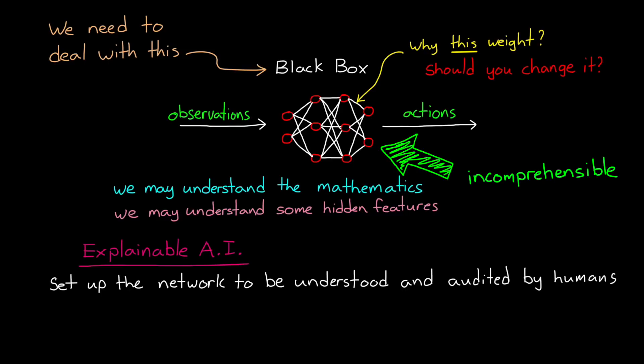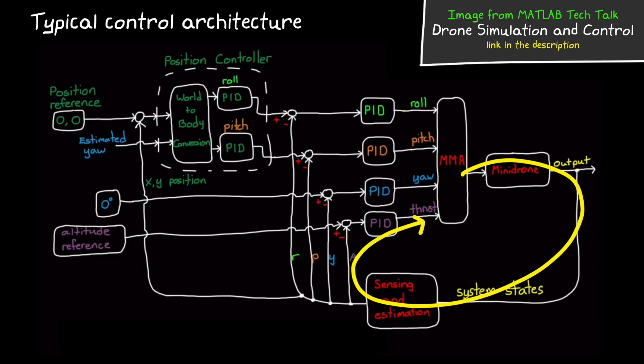Contrast this with a traditionally designed control system where there is typically a hierarchy with loops and cascaded controllers, each designed to control a very specific dynamic quality of the system. Think about how gains might be derived from physical properties like appendage lengths or motor constants, and how simple it is to change those gains if the physical system changes.